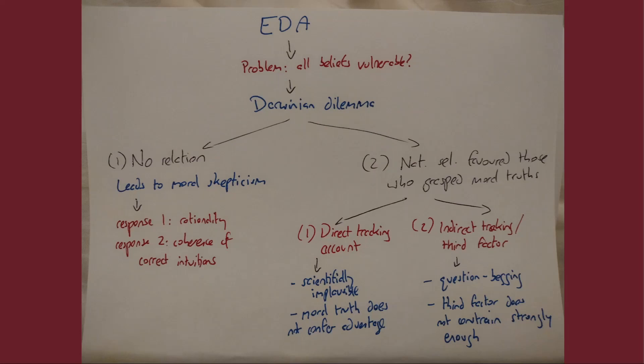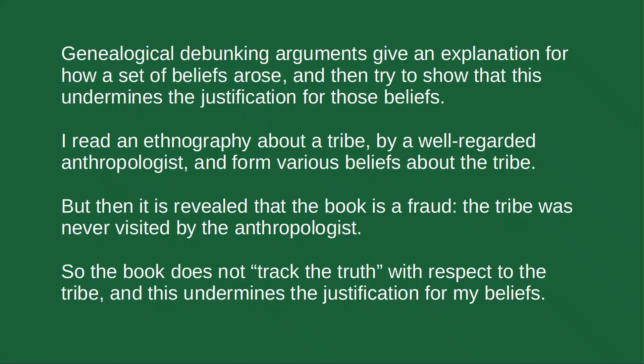Evolutionary debunking arguments are a type of genealogical debunking argument. In a genealogical debunking argument we give an explanation for how a belief or set of beliefs came about and then we try to show that this undermines our reason for thinking that those beliefs are true. So you undermine the justification of a belief by explaining the origin of that belief.